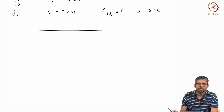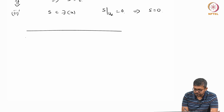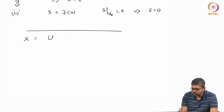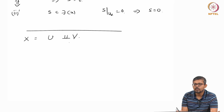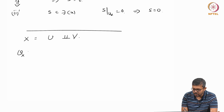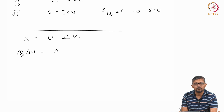Here is an example of a pre-sheaf which is not a sheaf. Take X equal to U union V — a disjoint union of two open sets. For every open subset, define F of U to be some abelian group A, where A is a fixed abelian group.